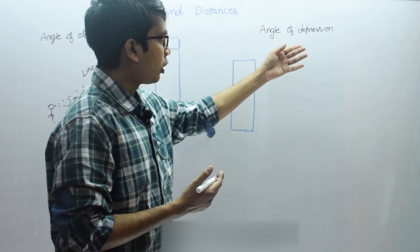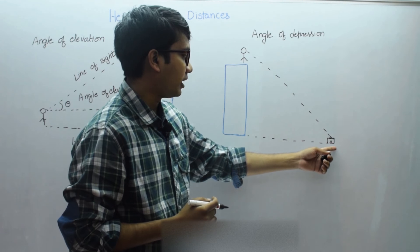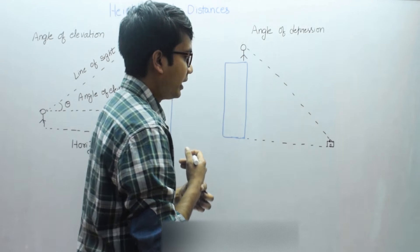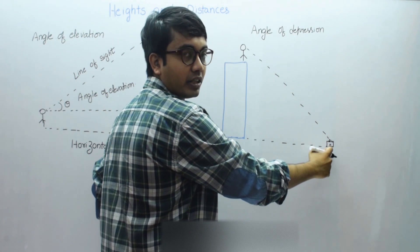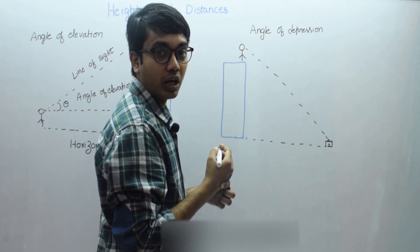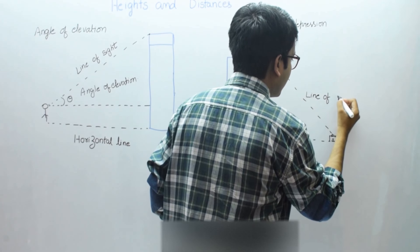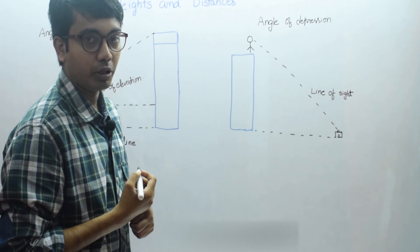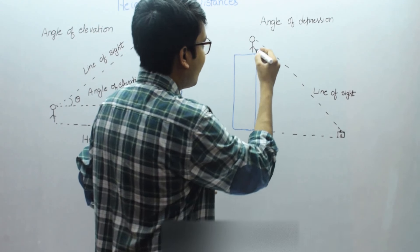Next we will go to angle of depression. A boy is standing on top of a building and his school bag is on the ground. He tries to watch the school bag from the top of the building. Here the line of sight will be the line drawn from the eye of the person to the point in the object viewed by the observer. This is the point being watched, so this will be the line of sight. The horizontal line in this case will be at the top, at the level of the observer.